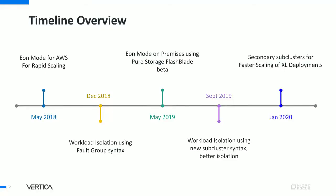Thanks, Paige. Hey, everybody. Let's start with a timeline of the life of Eon Mode. About two years ago, we introduced Eon Mode on AWS specifically for the purpose of rapid scaling to meet the cloud economics promise. It wasn't long after that we realized that workload isolation — a byproduct of the architecture — was very important to our users. You can see that the importance of workload isolation was manifest in Eon Mode being made available on-premise using Pure Storage FlashBlade, followed by improvements to workload isolation with a new type of subcluster and the introduction of secondary subclusters for faster scaling.